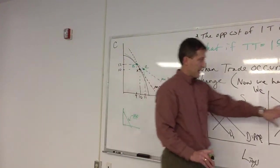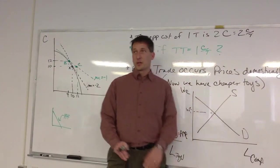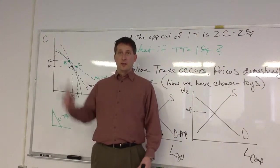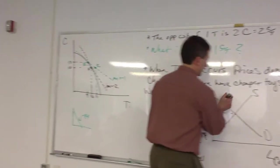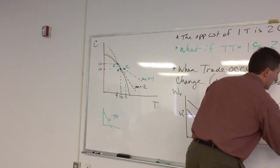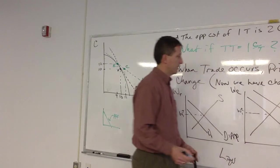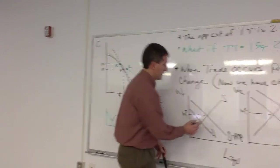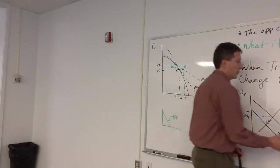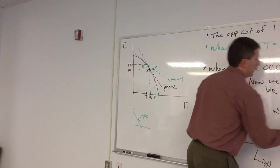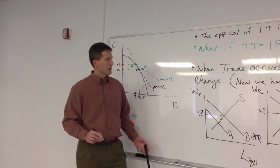On the flip side, the demand for computers is going up. Prices are rising, relatively speaking. And so they are moving to D1. And so you've got wages falling in one sector. And wages rising in another sector.